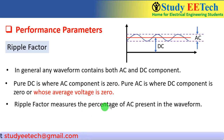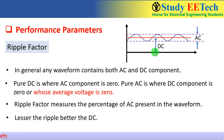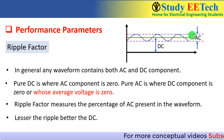The ripple factor measures how much AC is involved in the DC output. The lesser the ripple, the better the DC is. Our goal is to make the output ripple-free. Ideally the ripple should be zero and the ripple factor should be zero, but in practice there will be some amount of ripple. Using filters we can reduce this ripple, and we will see that later on.